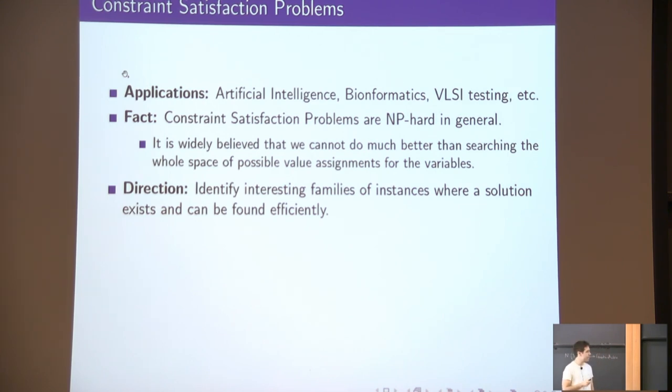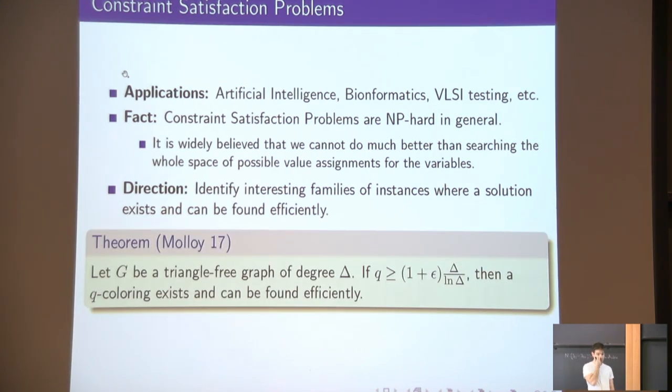Let me give you an example, again in the problem of two-coloring. Imagine that we restrict our attention to graphs that are triangle-free. A recent result of Molloy says that if the number of colors q is more than delta over log delta, where delta is the degree of the graph, then a solution exists and can be found efficiently.